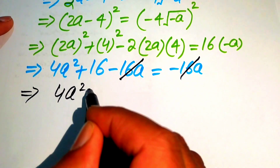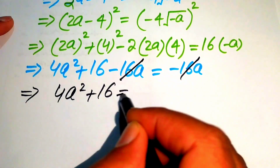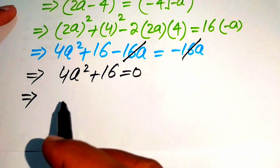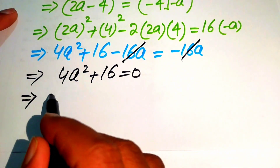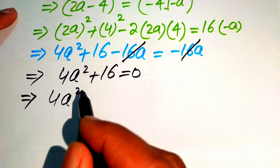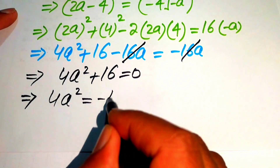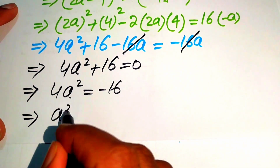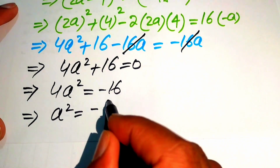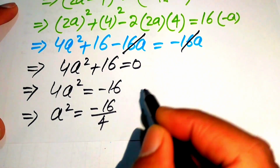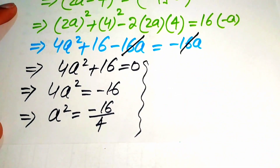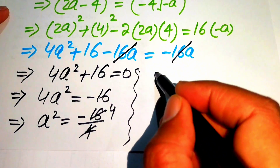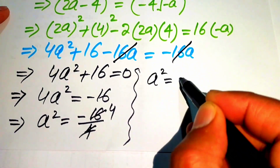This equation implies we move 16 to the right hand side, giving 4a² equals −16. Dividing both sides by 4, we get a² equals −4.